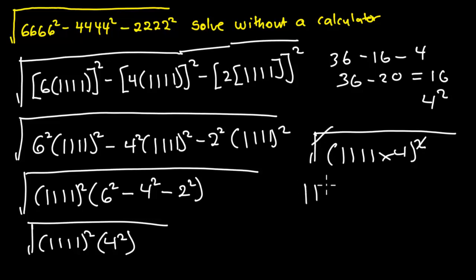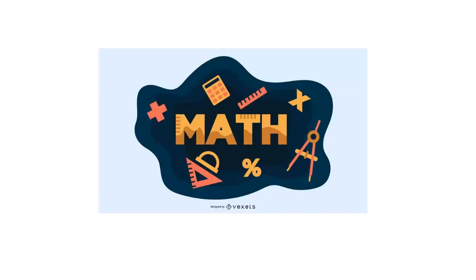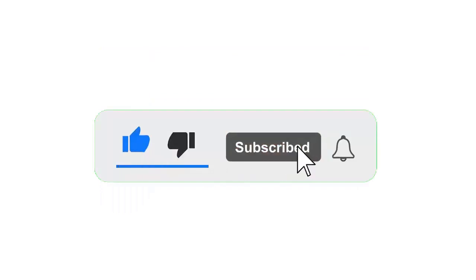You are going to be left with 1111 times 4, and 1111 times 4 is going to give us 4444. So this will be the answer to this question. Thank you for watching — see you in the next video. If you find this video useful, don't forget to subscribe, like, and comment as well.